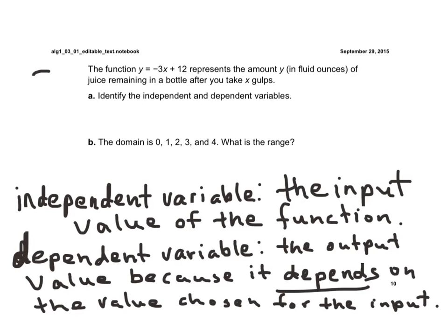So here are the last two definitions I want you to put in your notes. First, an independent variable is the input value of the function. The independent variable is called the independent variable because we usually get to choose the value that we're plugging in. So if we're choosing what we're plugging in, then it's independent.